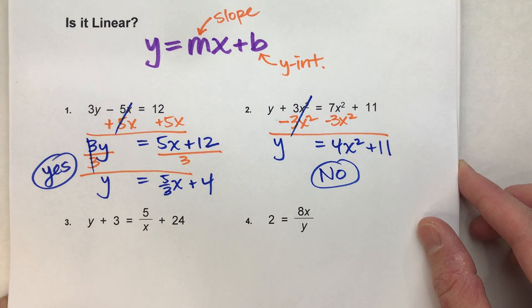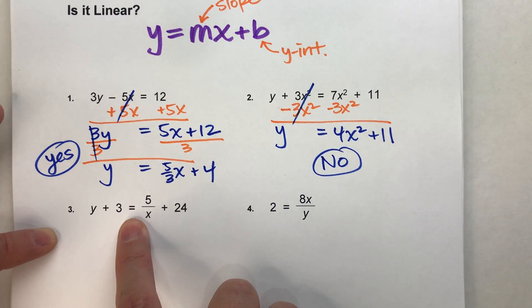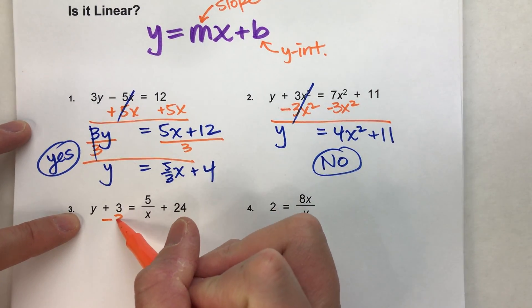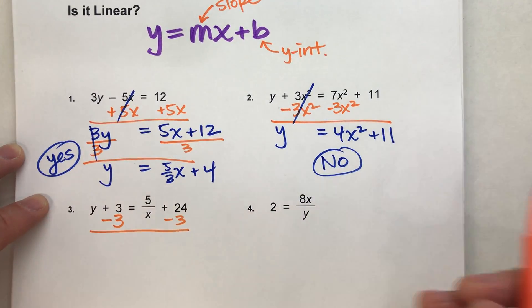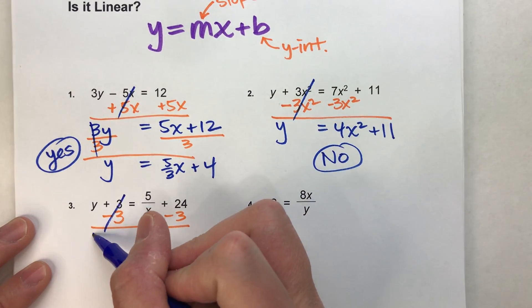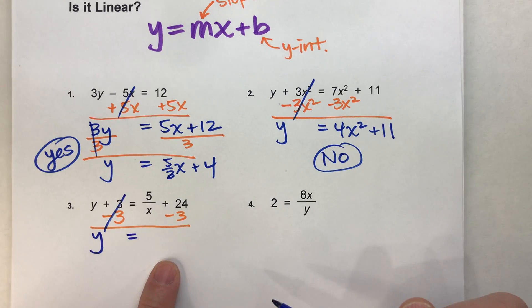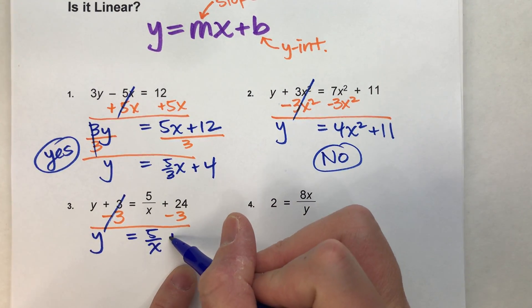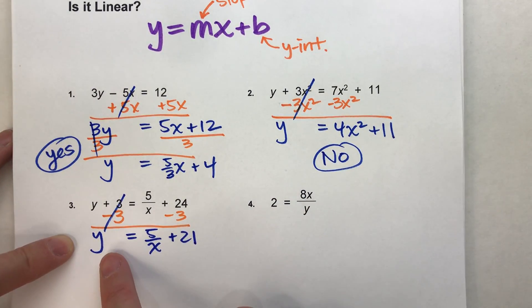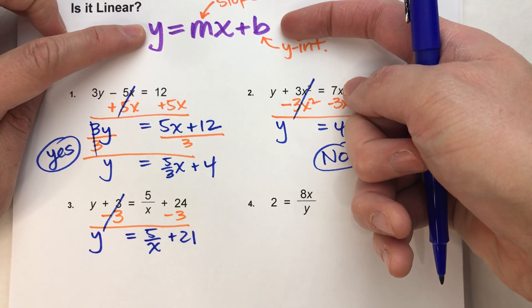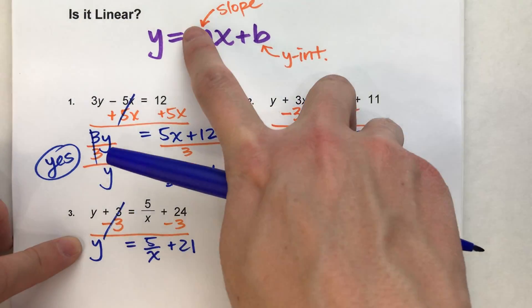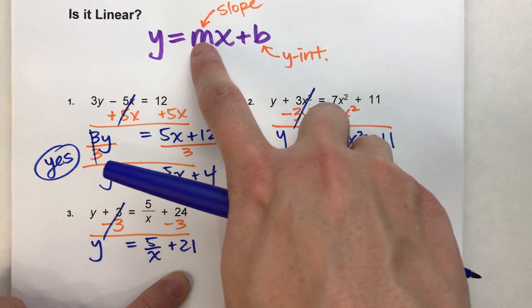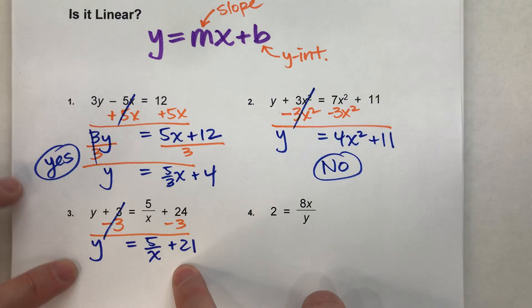Example three: y plus 3 equals 5 divided by x plus 24. To get y by itself, subtract 3 from both sides. The 3s undo each other, giving y equals 5 divided by x plus 21. This is not in slope-intercept form — we need y equals a number times x, but here we have something divided by x. This is not linear.